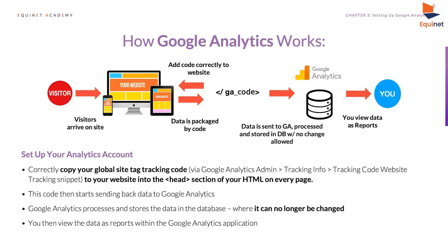You will need to set up a Google Analytics account. Once you have set up an account and have your property set up, you will have a unique tracking ID. You will need to correctly add this global site tag tracking code into the head section of every page of your website's HTML.